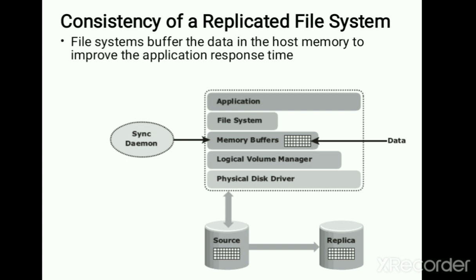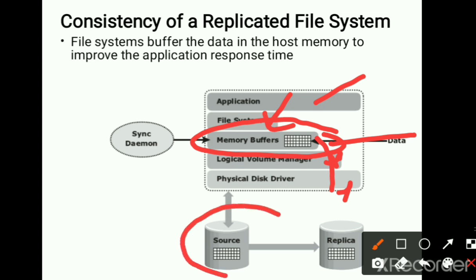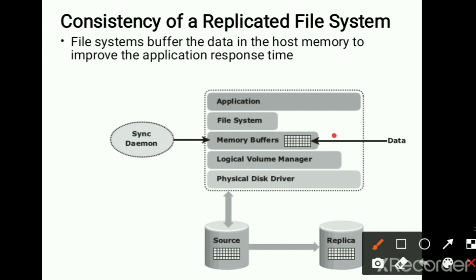For that purpose in the Unix system we have a sync daemon file — a command used where the application you have created is mounted onto the file system. Memory buffers play a very important role: every time you write data to the physical disk, it is first buffered, then moved to the cache, and from the cache copied to secondary storage. From the memory buffers it goes to the logical manager, then the physical drive — that is the source — and the replica copy is created. Whenever the replica is being sent, we must make sure the memory buffers are cleared and flushed.